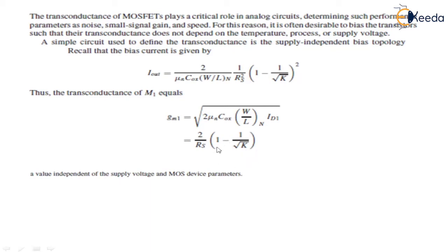This value — we can see that it is independent of the supply voltage as well as MOS device parameters, and it is derived from I_out, the current equation which is already independent of the supply voltage VDD. So this GM1 is also independent of the supply voltage and MOS device parameters.